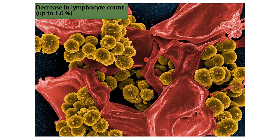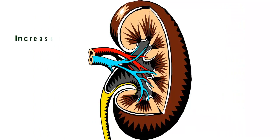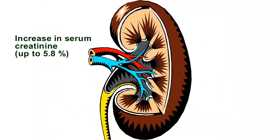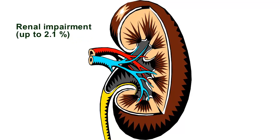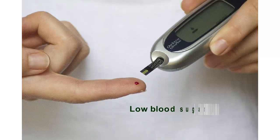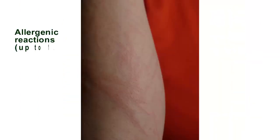Decrease in lymphocyte count: up to 1.6%. Increase in serum creatinine: up to 5.8%. Renal impairment: up to 2.1%. Low blood sugar level: up to 4.8%. Allergenic reactions: up to 1.5%.